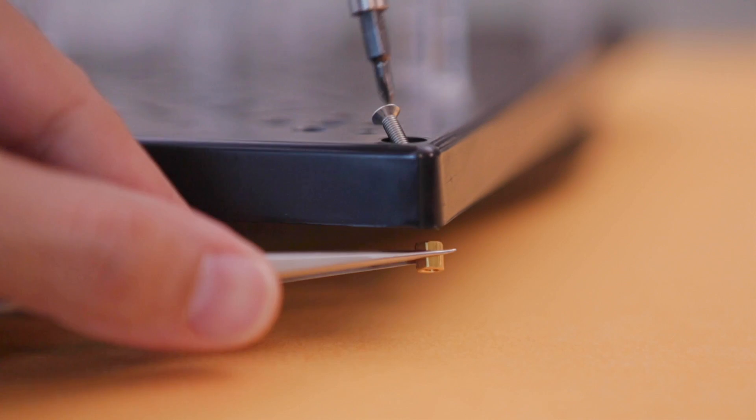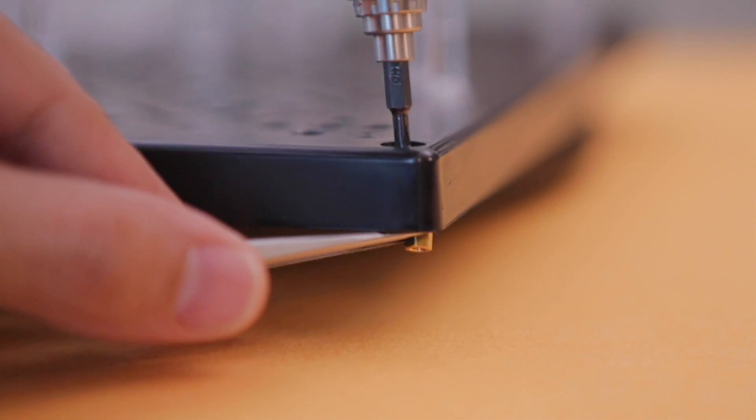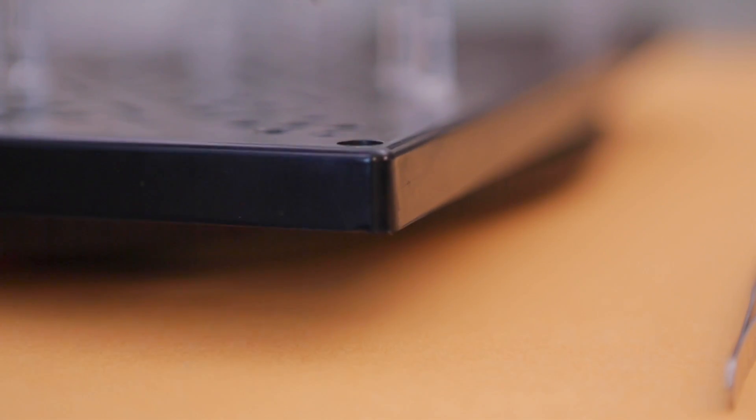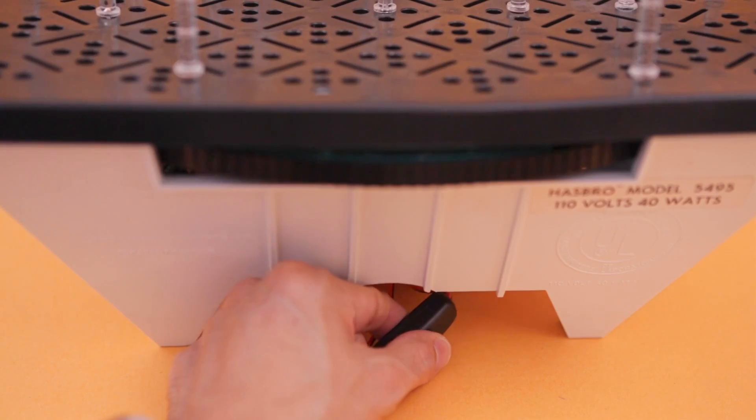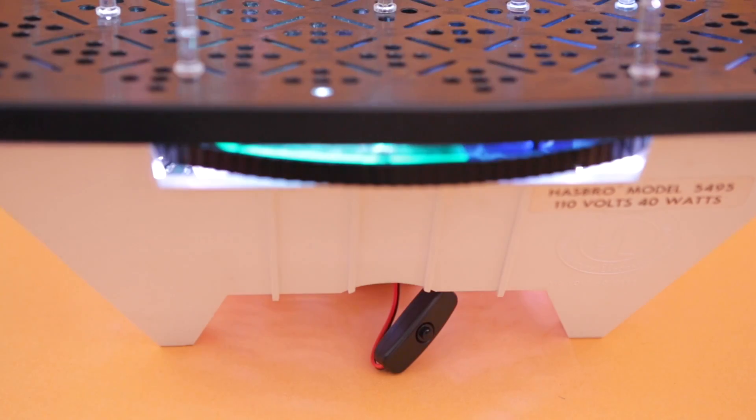To elevate the base and provide more clearance, additional standoffs are added to the corners. This allows the color wheel to spin freely without catching the edges. An external toggle switch makes it easy to power it on and off.